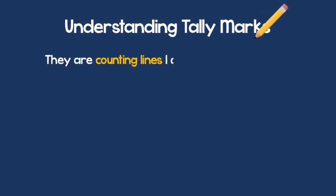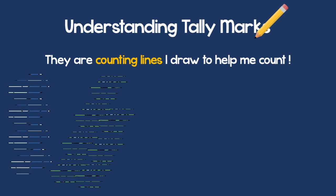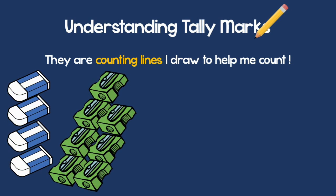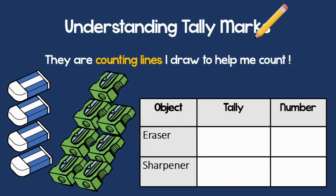Tally marks are counting lines I draw to help me count. Let's look at these stationary items. I will draw a table to count them. I will cross an eraser and put a tally mark. Each time I cross an eraser I will put a tally mark. How many tally marks did I draw? Four.